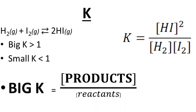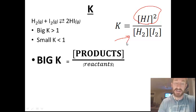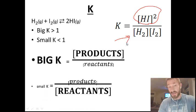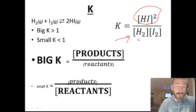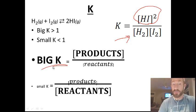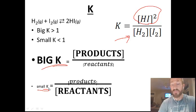A big K means there are more products. For this reaction, there would be a greater concentration of hydrogen iodide than of the reactants hydrogen and iodine. Conversely, a small K means a lot of reactants — the reaction doesn't go very far to the right; reactants on the left predominate, and the product hydrogen iodide would be present in a very small amount. So a big K means the reaction proceeds to the right with a lot of products, while a small K means the reaction stays to the left with mostly reactants.